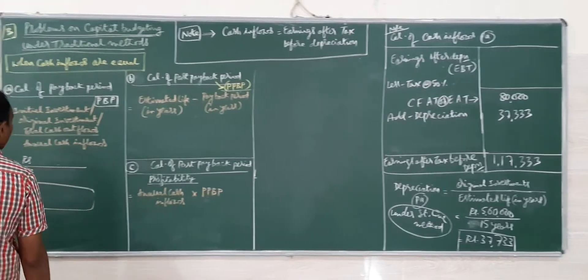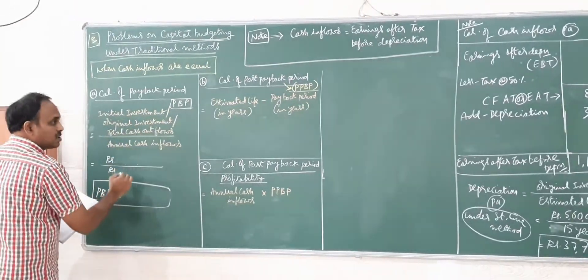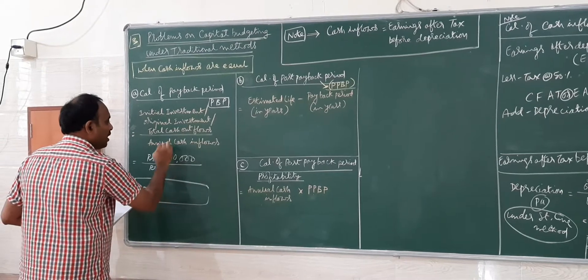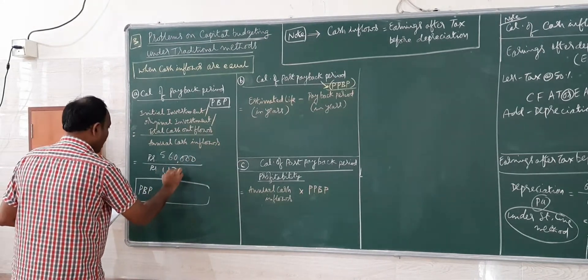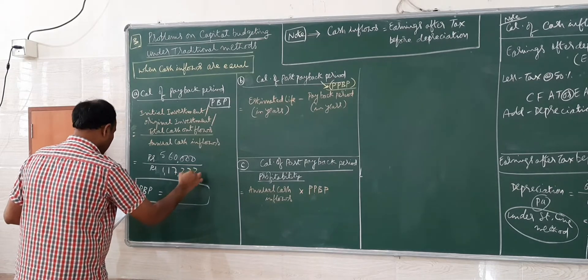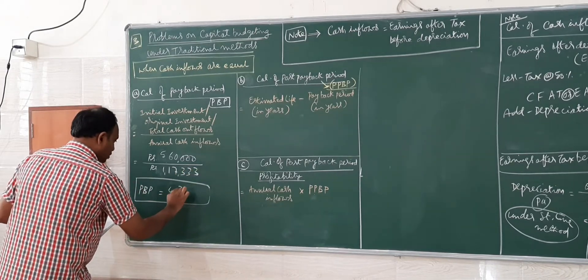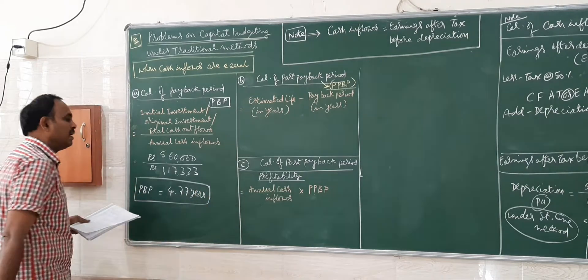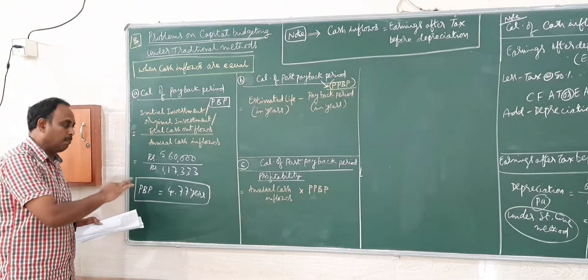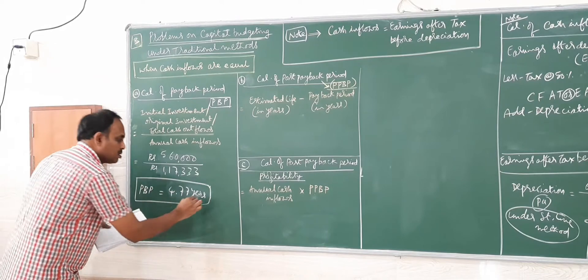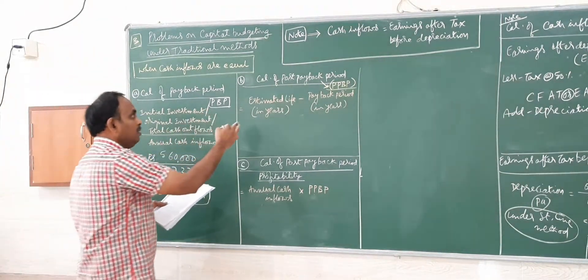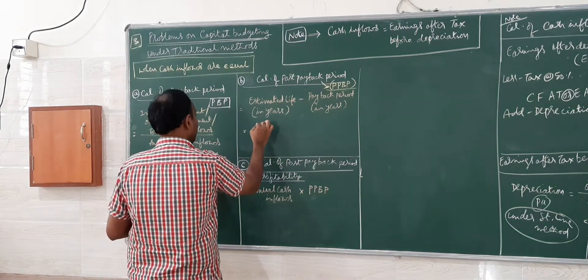Let me come to the calculation of payback period. Initial investment Rs.5,60,000 divided by annual cash inflow as calculated Rs.1,17,333, it comes to 4.77 years. So payback period is 4.77 years.